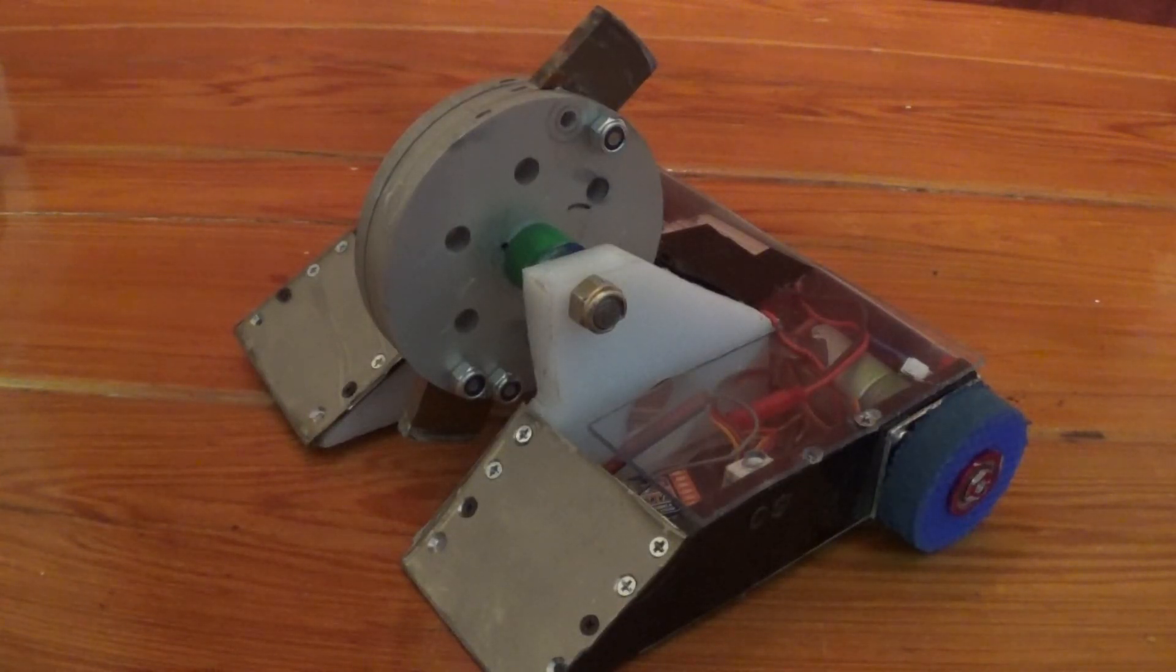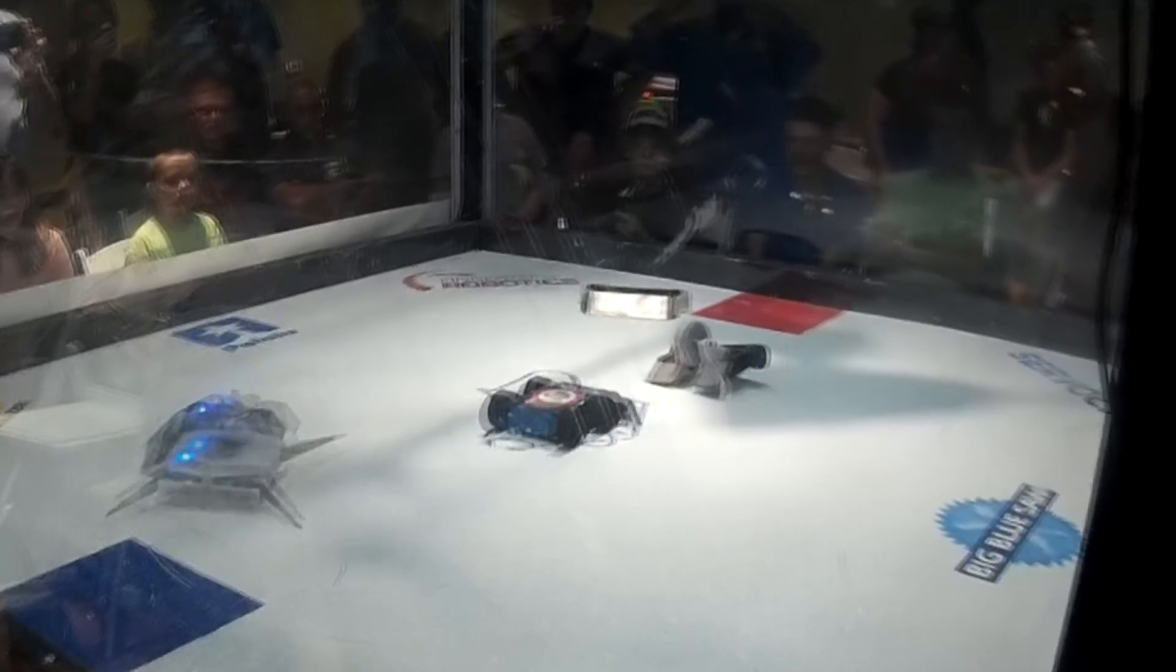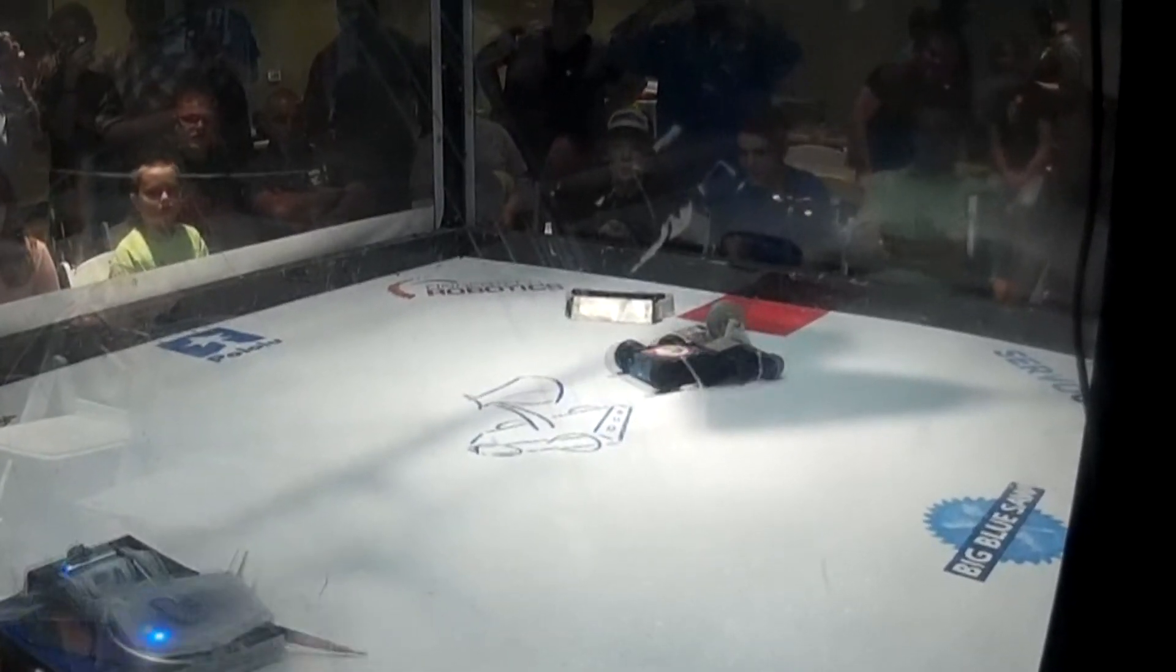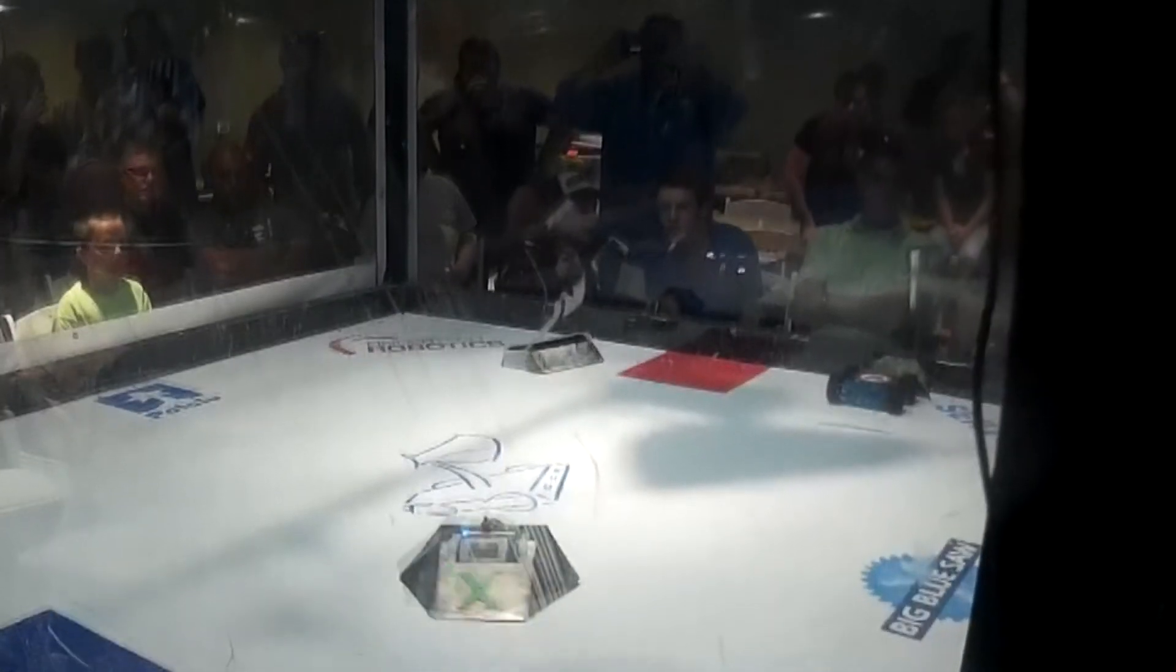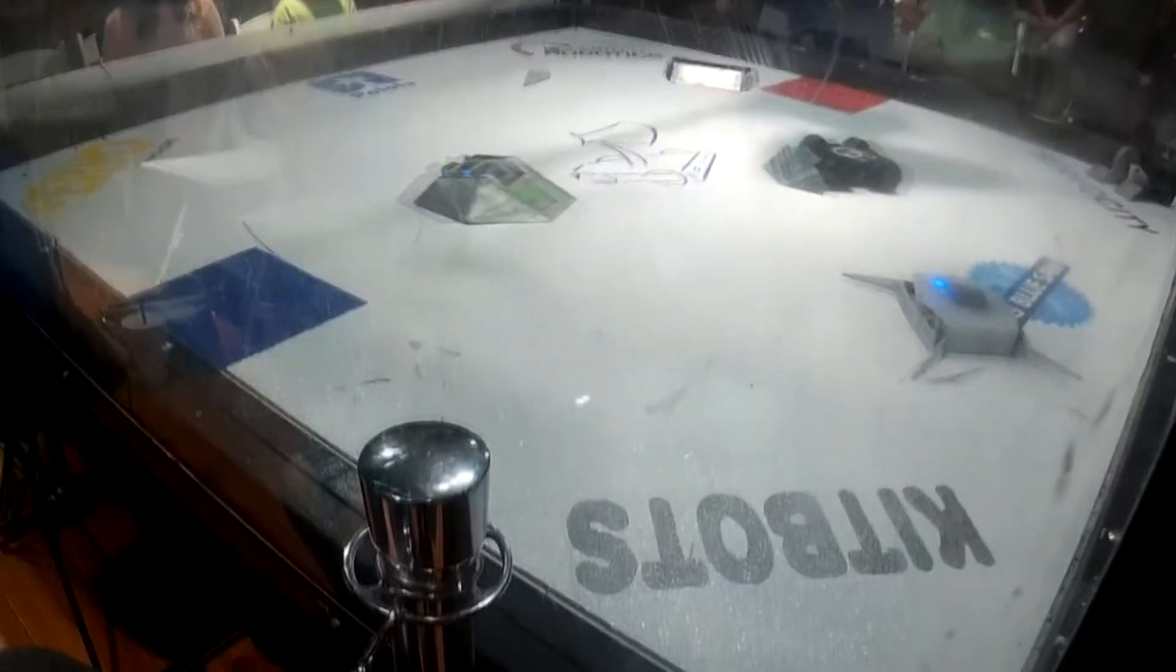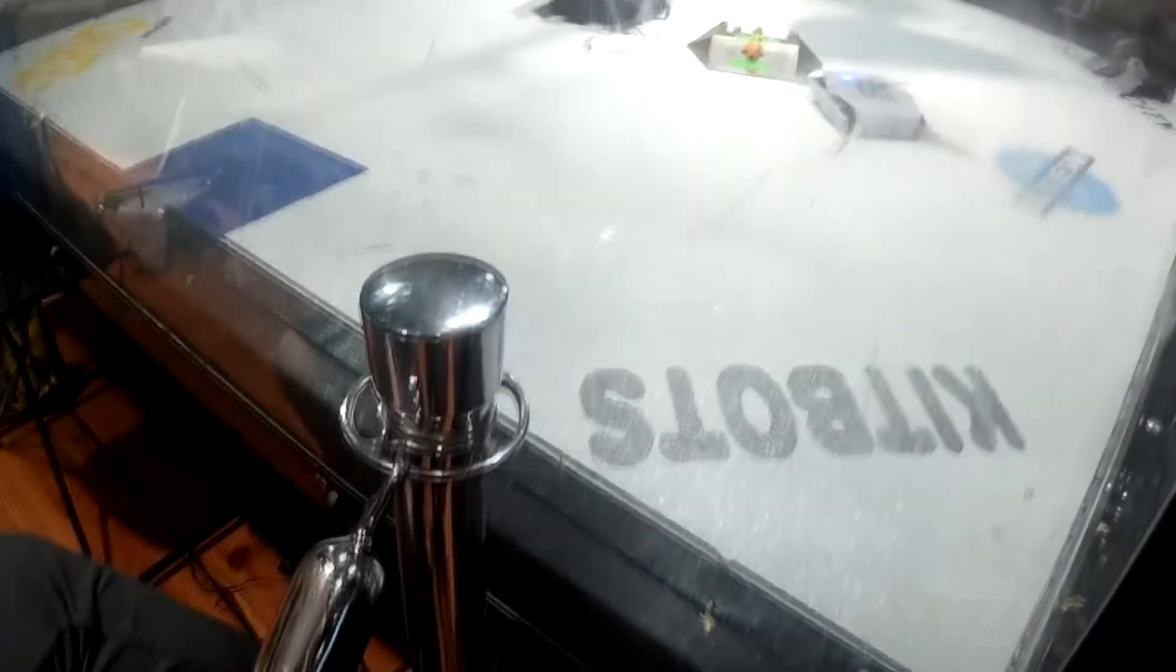With two losses under my belt, I did enter Demon Spawn in the beetleweight rumble, which I was pretty excited about because it had some of the spinners I really wanted to face. Unfortunately, before I could get to any of those spinners, Demon Spawn got scooped up by Hailstone and thrown into the wall. I actually broke off the lexan protective coating on the wall - sorry Chuck.